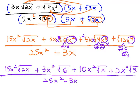But we're not done yet, because we can still simplify the fraction by factoring out a GCF. In the numerator there's a GCF of x, leaves behind, sorry it's x squared, leaves behind 15 square root of 2x, plus 3 square root of 6.